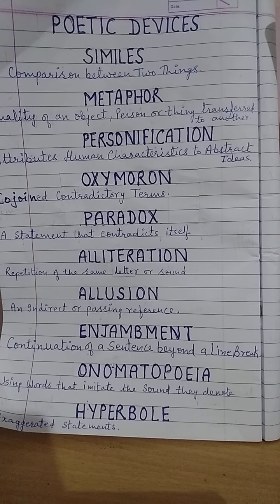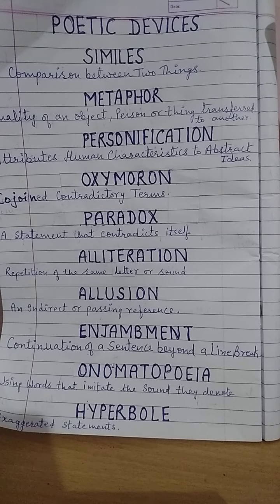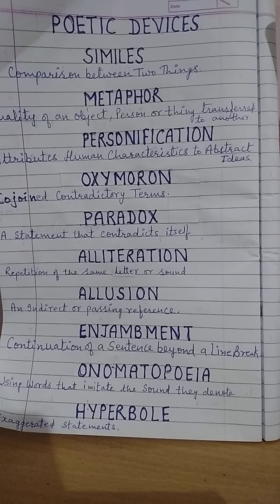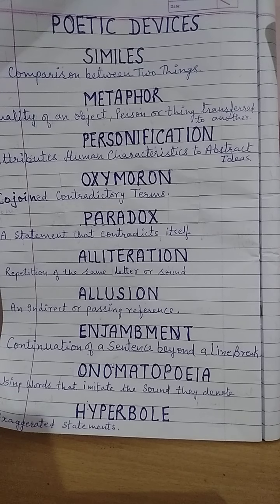So these are all similes — comparison between two persons, two things, two objects. Next, our poetic device is metaphor. In metaphor there is no comparison, but the quality of an object, person or thing is transferred to another. For example, 'He is a lion' — the lion is known for his strength and bravery, so that quality is transferred to him. 'She is a fox' — the quality of the fox is transferred to her. So this is a metaphor.